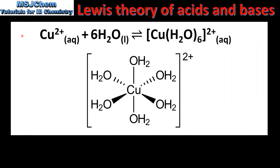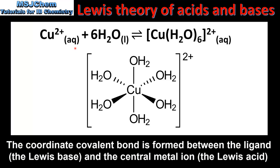The Lewis theory of acids and bases can also be applied to the formation of complex ions. In this reaction a copper 2+ ion reacts with 6 water molecules to form a complex ion. Each water molecule donates a lone pair of electrons to the central metal ion, resulting in the formation of a coordinate covalent bond. The water molecules, which are also known as ligands, are acting as Lewis bases, and the central metal ion is acting as a Lewis acid.